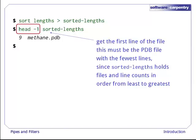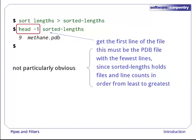This must be the file with the fewest lines, since sorted-lengths holds files and their line counts in order from the least to the most. If you think this is confusing, you're in good company.